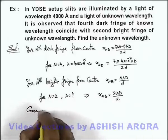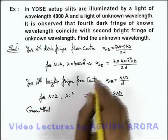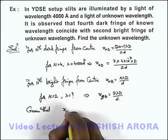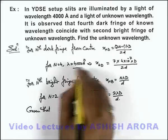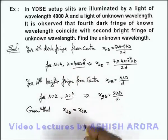And we are given that, this is for the second bright fringe, it is given that x_4d of the wavelength 4000 is equal to x_2b of unknown wavelength.